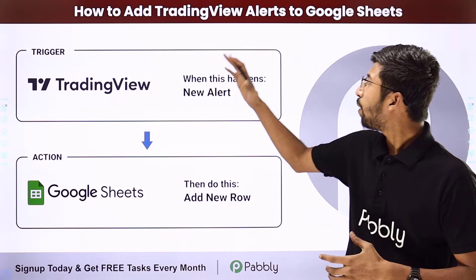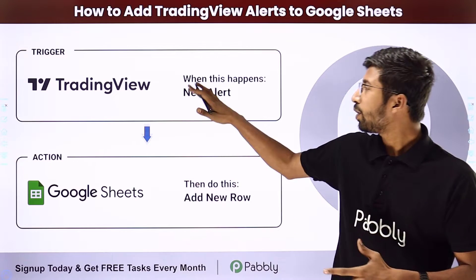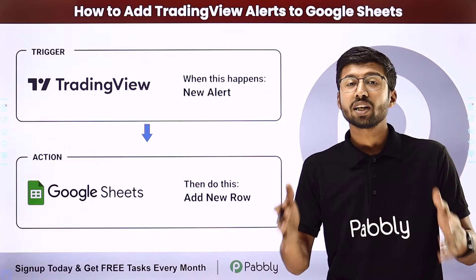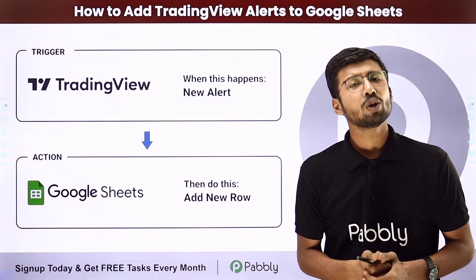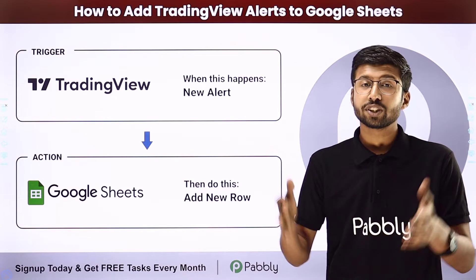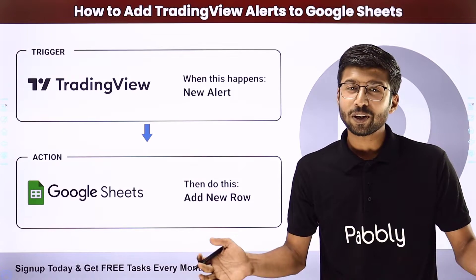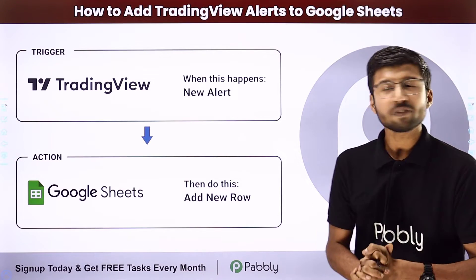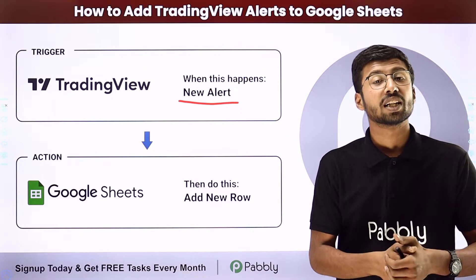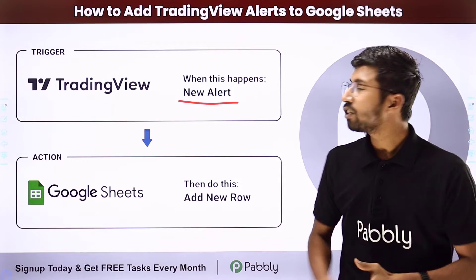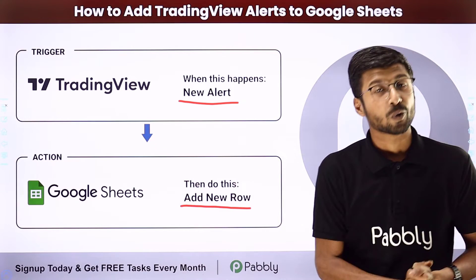In this video, we will learn how to add TradingView alerts to Google Sheet. Suppose you are using TradingView to have a record and alert updates of all your favorite stocks and indexes, and you want to add those new alerts into a Google Sheet to have a complete track record. You can completely automate this process. The trigger will be getting an alert message on your TradingView account, and the action will be adding those new alert updates into a Google Sheet as a new row.